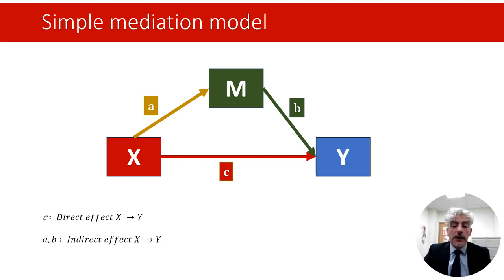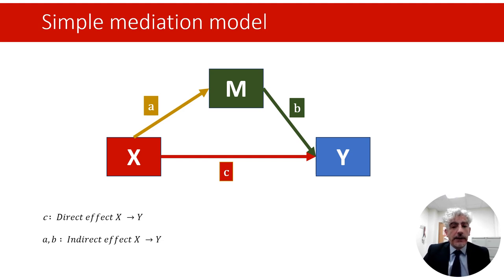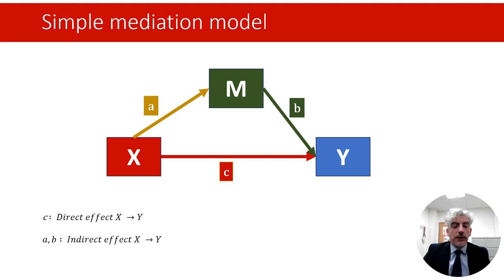Note that for the time being I'm not considering when these variables have been measured. In principle, mediation models can be applied to cross-sectional studies where the three variables are observed at the same time on the same occasion. However, mediation models are causal models — they are making assumptions about which variables are causes of other variables. And this means that while it is possible from a mathematical statistical point of view to assume that X causes Y and the influence of X on Y is mediated through M, even when these measures are taken on the same occasion, arguing that these variables are causally related requires more than just statistics. It's important to remember that in a mediation model we are making assumptions about causality, and these assumptions need to have further justifications beyond the statistical model.